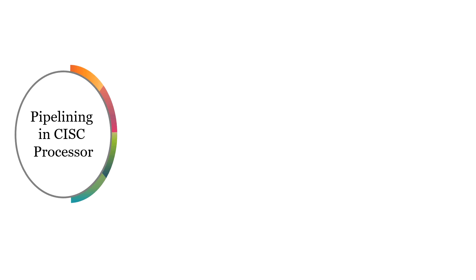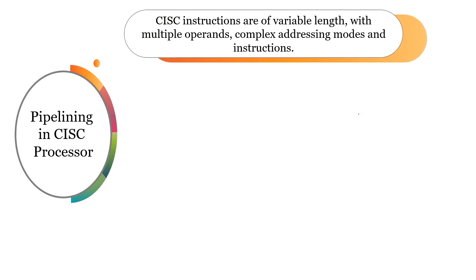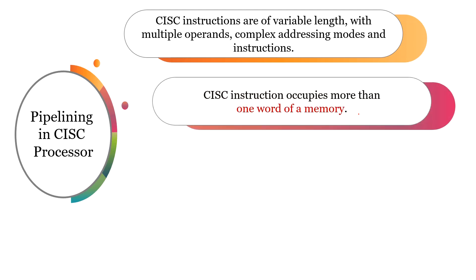Let us discuss if pipelining can be implemented in CISC processors or not. We know CISC instructions are of variable length with multiple operands and complex addressing modes and instructions. So CISC instructions occupy more than one word of memory.